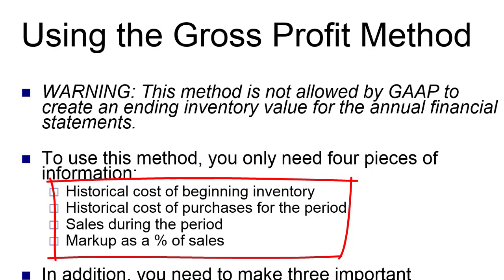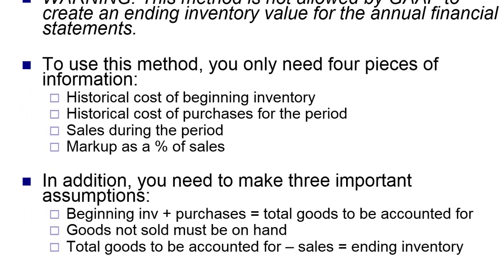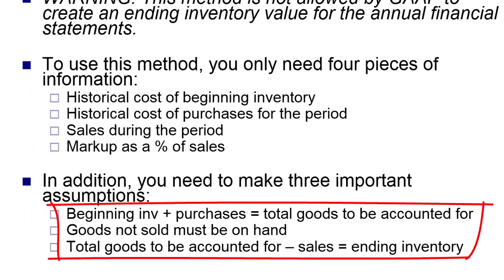In addition to the information we need, we also have to make a couple of assumptions — and this is where FASB gets a little upset. First, we have to assume that beginning inventory plus net purchases gives us total goods to be accounted for, which is the equation FASB gives us for cost of goods available for sale — we're okay with that one. Second, we have to assume that anything not on hand was sold.